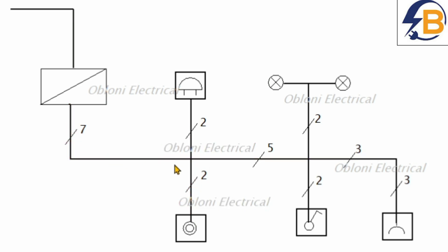The numbers used in this wiring indicate the number of wires that pass through each branch of the circuit. We have a branch here, another branch here, another branch here, and so on. The seven here indicates that there are seven wires that pass through this branch, and the two here indicates that there are two wires that pass through this branch.